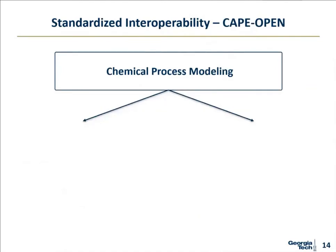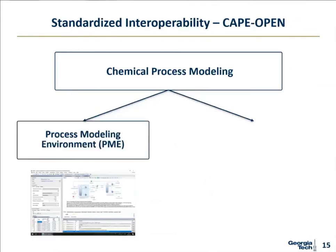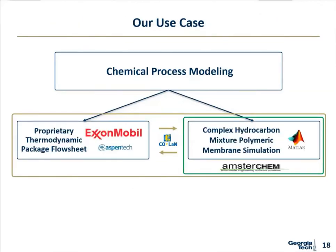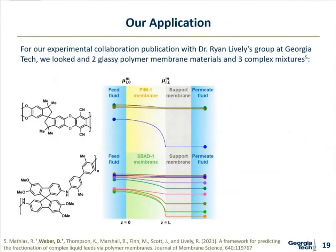A solution is the standard interoperability of CAPE-OPEN, which I've found to be a general umbrella term for chemical process modeling. We have the Process Modeling Environment (PME) and the Process Modeling Component (PMC), and CAPE-OPEN acts as a socket and plug to communicate between them. For our specific use case, we're looking at a proprietary thermodynamic package flowsheet from our ExxonMobil collaborator in AspenTech, and our complex mixture polymeric simulation through MATLAB, using the AmsterChem wrapper to communicate between the PME and PMC.